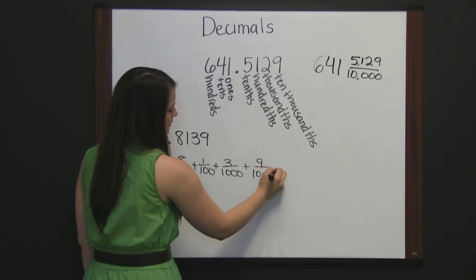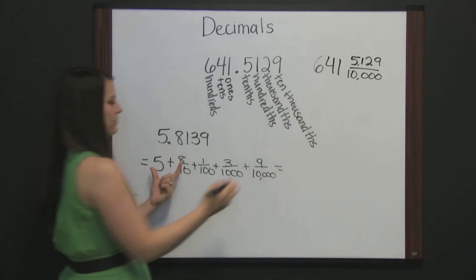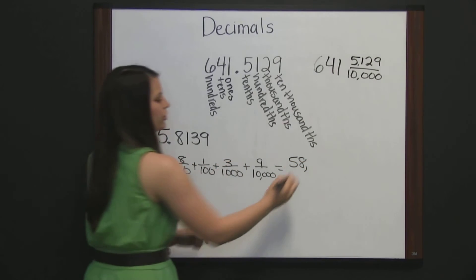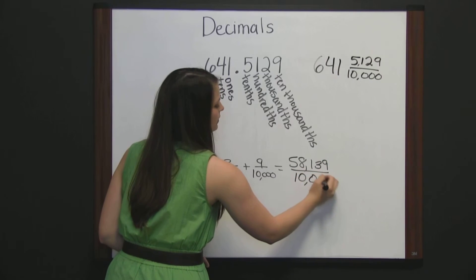which would give us 58,139 ten thousandths.